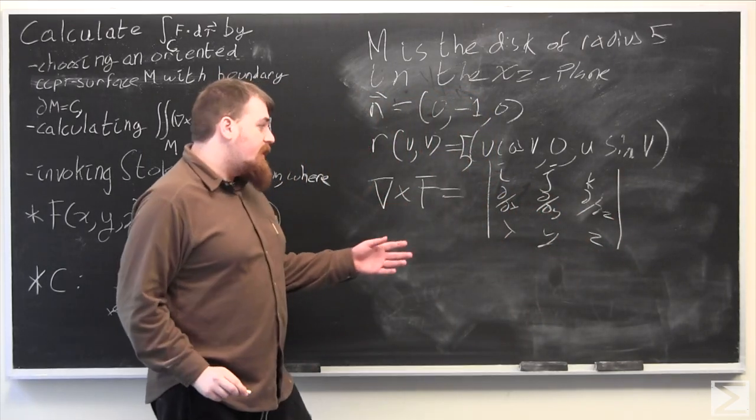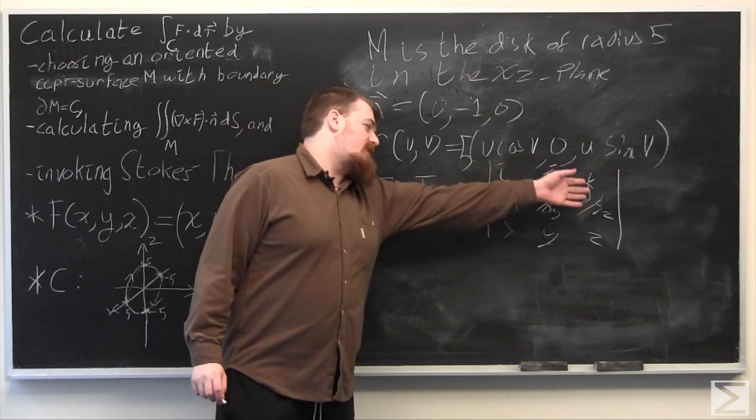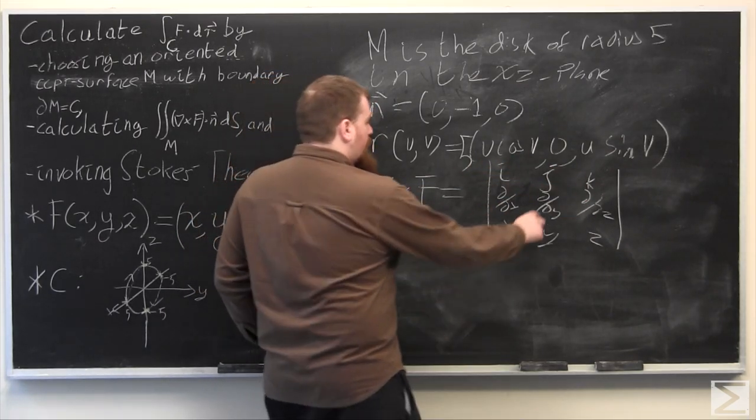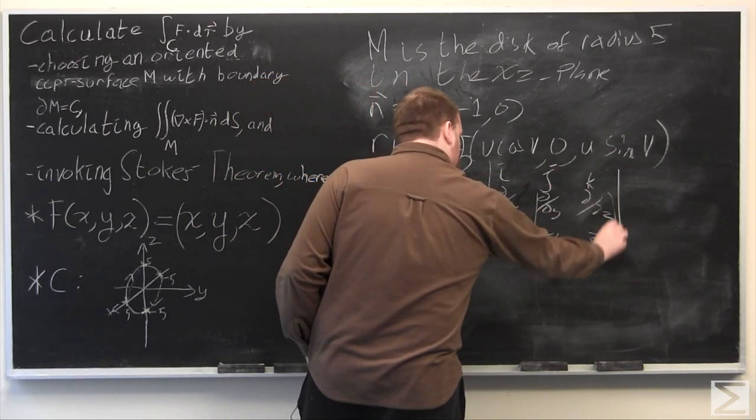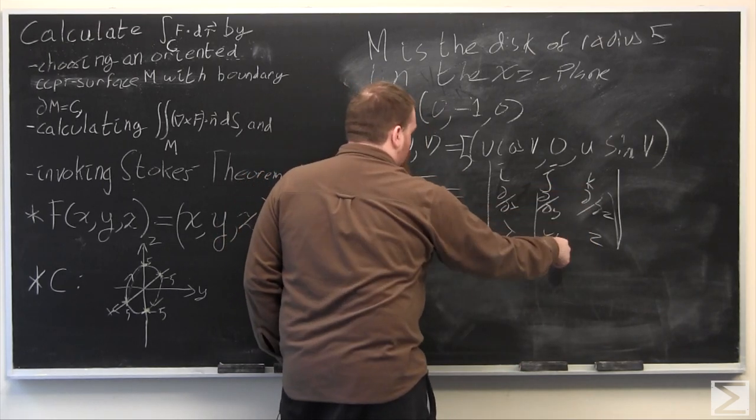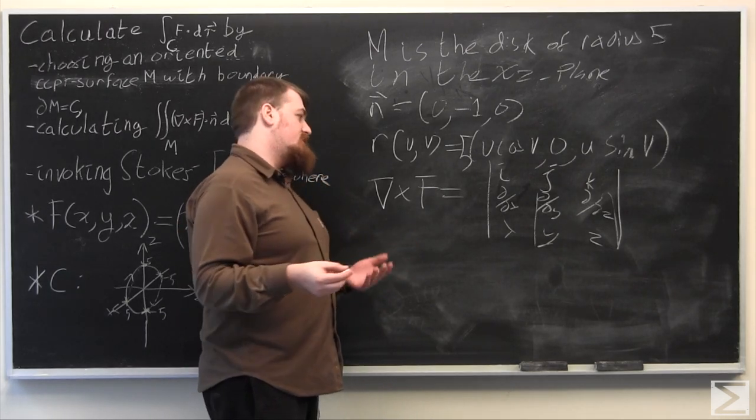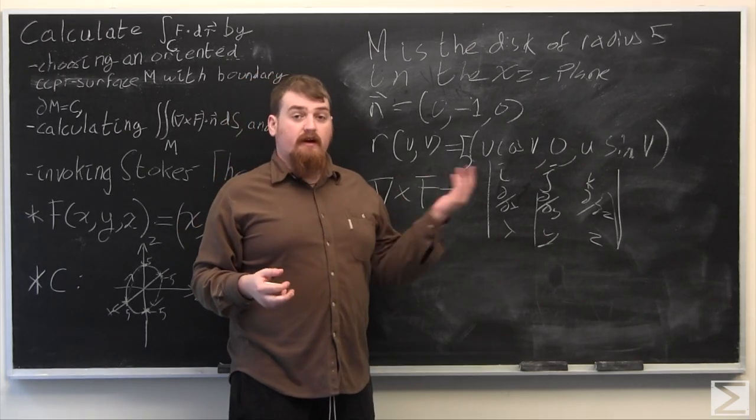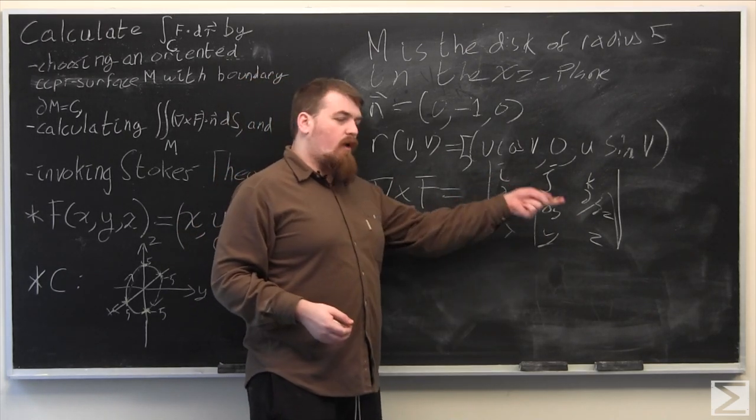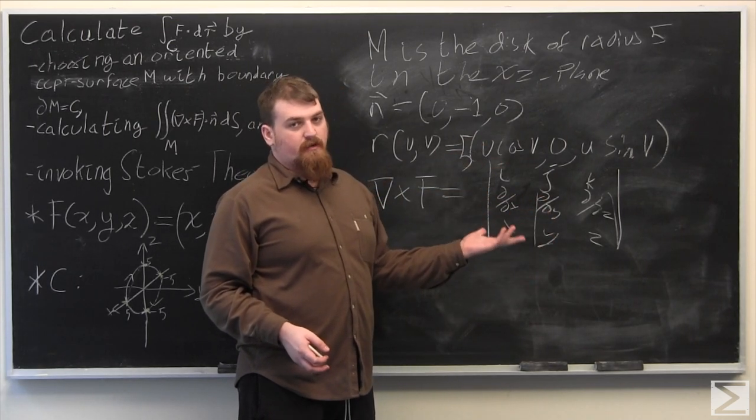And if we look at this, the minors that are multiplied by each of the vectors in this determinant expression, for example, this minor, this is partial z by partial y minus partial y by partial z, both of these are going to be 0, since z and y don't depend on each other, and x doesn't depend on z or y, and z and y don't depend on x.